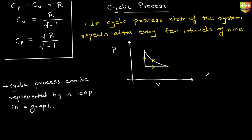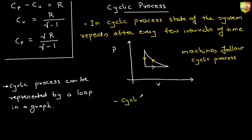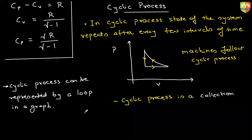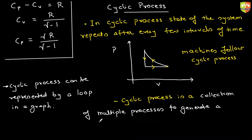Basically, machines follow cyclic processes. Please note down another point: a cyclic process is nothing but a collection of multiple processes to generate a closed loop.